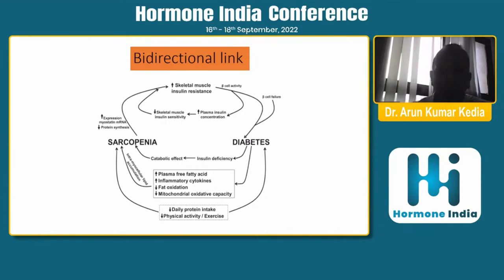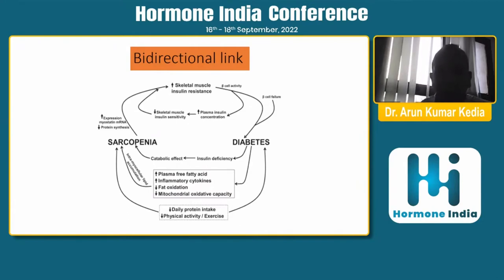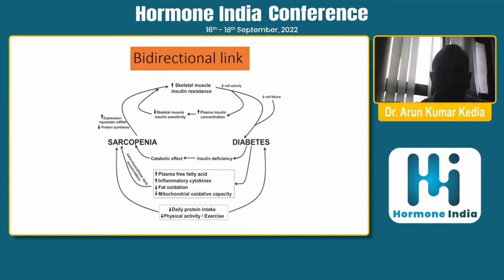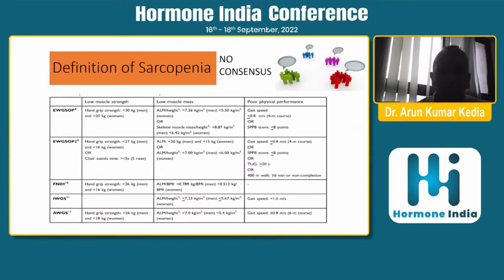This bidirectional link between sarcopenia and diabetes is very strongly studied, and we must understand it. We must start looking for sarcopenia in all our patients with diabetes and try to prevent it as much as possible.